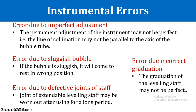The next error is due to incorrect graduation of the leveling staff. The least count of a leveling staff is typically 5 mm. If the graduations are not accurate, it will produce systematic errors in all readings.